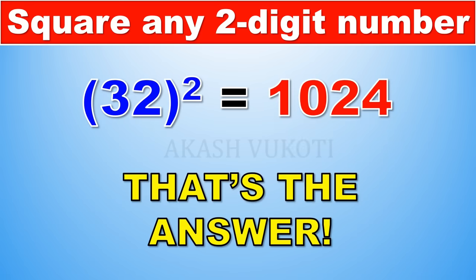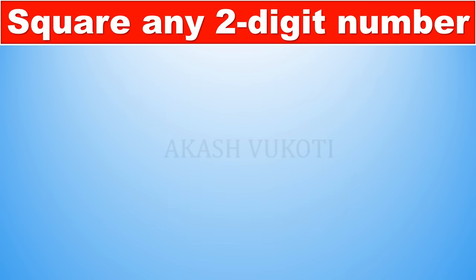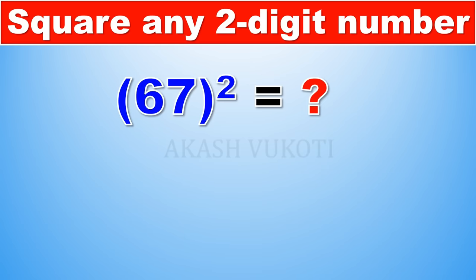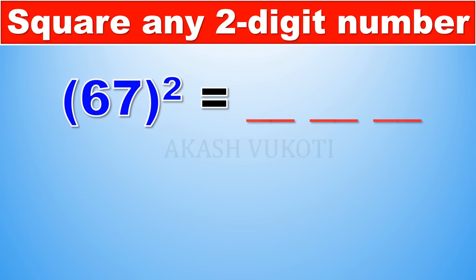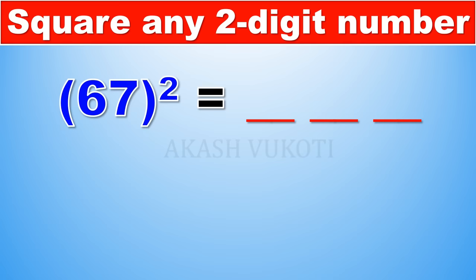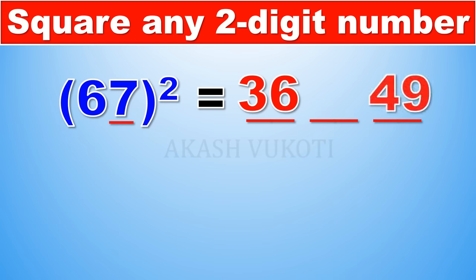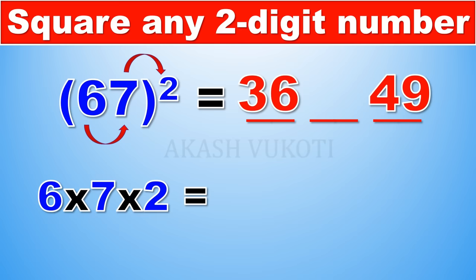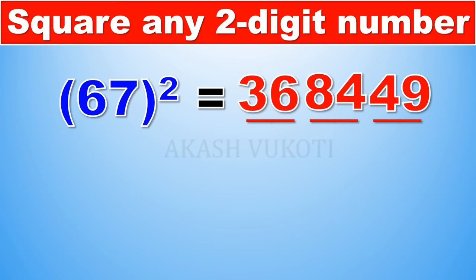Our third example is 67 squared. We divide the answer into three portions. The first part is 6 squared, which is 36. The last part is 7 squared, which is 49. The middle part is 6 times 7 times 2: 6 times 7 is 42, times 2 is 84.